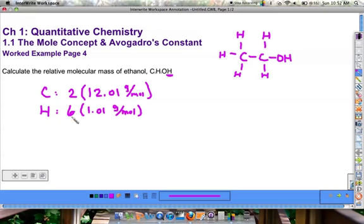So back to our problem, we'd have six times 1.01. Finally, we have this one lone oxygen, so we would have one multiplied by 16.00 grams per mole.